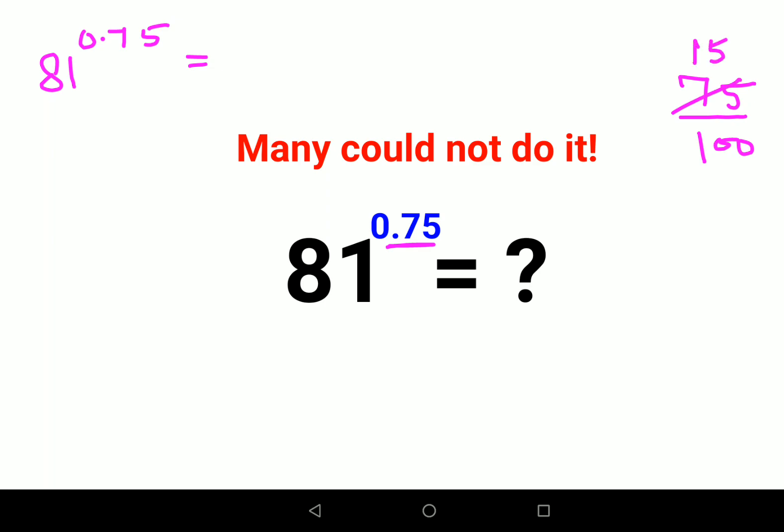You can further divide it by 5 which gets you 3 and 4. So instead of 81 raised to 0.75, I can write this as 81 raised to 3 upon 4.